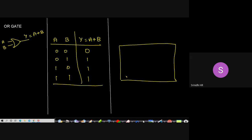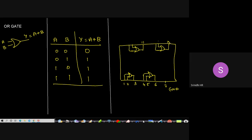For the OR gate pin diagram: pins 1 and 2 are inputs, pin 3 is output; pins 4 and 5 are inputs, pin 6 is output; pin 7 is ground; pins 9 and 10 are inputs, pin 8 is output; pins 13 and 12 are inputs, pin 11 is output; pin 14 is power supply. The IC number associated with the two-input OR gate is 7432.